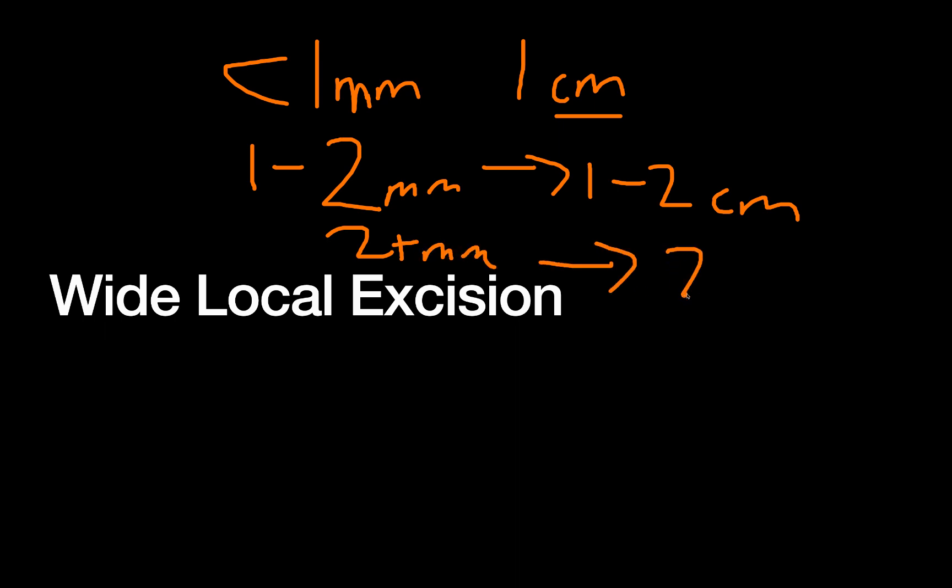So if you recall our different stages: a T1 lesion is less than or equal to one millimeter deep, that lesion would get a one centimeter margin. If we have a one to two millimeter deep lesion, that would get a one to two centimeter margin. And then any lesion greater than two millimeters deep gets a two centimeter margin. All right, so less than or equal to one, one centimeter. One to two millimeters leads to a one to two centimeter margin, and greater than two we kind of cap out at a maximum of a two centimeter margin for our wide local excision.